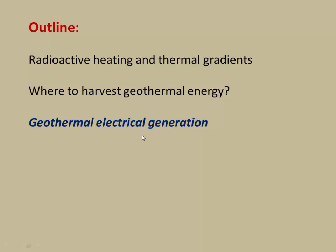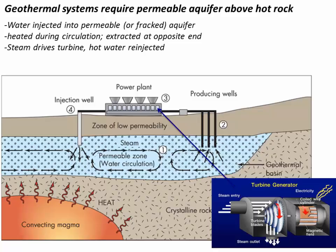Let's finish up and look at geothermal electrical generation — how do we actually make electricity from this heat flow? We need three things: basically a source of heat — magma or mantle — and then we need a permeable material sitting above it, such as loose sand or heavily fractured rock, something that we can pump water through.